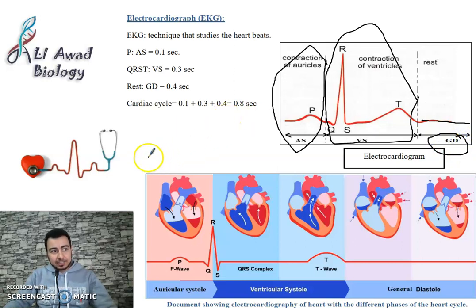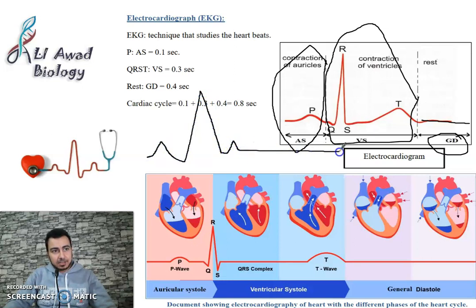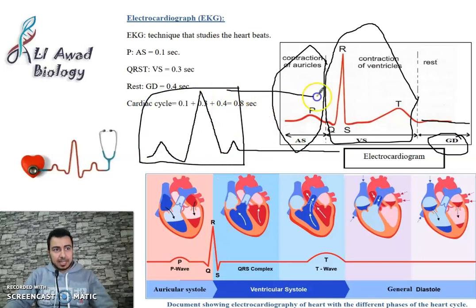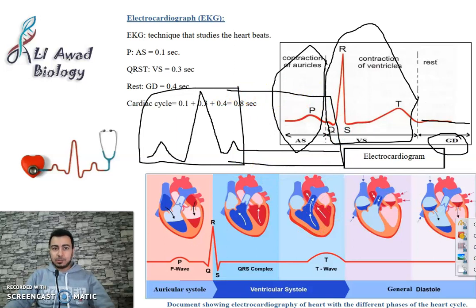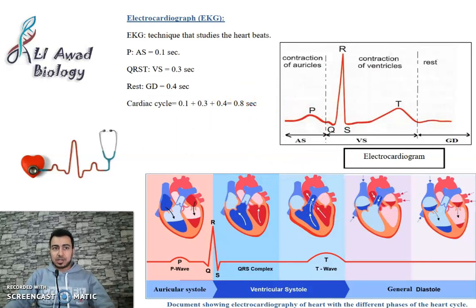So the cardiac trace consists of: auricular systole, ventricular systole, then relaxation. Notice that the duration of the auricular and ventricular systole combined equals the duration of relaxation — they are equal to each other.